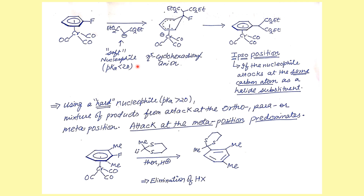This ipso substitution is generally observed whenever you are dealing with soft nucleophiles. We have studied that if we use dimethylcuprate lithium, that is Gilman reagent, or thiol — these are soft nucleophiles. You will see the direct attack on the carbon where the leaving group is attached. But whenever we use a hard nucleophile, whose pKa values are greater than 20, what we tend to observe is the formation of ortho, para, and meta products, with the negative charge attacking the meta position.